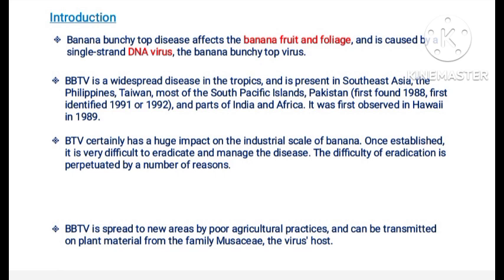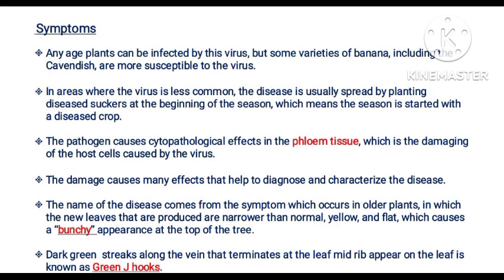It was first observed in Hawaii in 1989. Banana Bunchy Top virus has a huge impact on industrial scale of banana cultivation. Once established, it is very difficult to eradicate and manage the disease. Banana Bunchy Top disease is spread to new areas by poor agricultural practices and can be transmitted to plant material from the family. The virus host plant can be infected by this virus, but some varieties of banana including Cavendish are more susceptible.